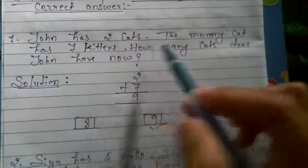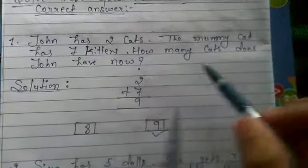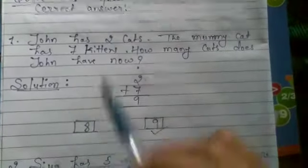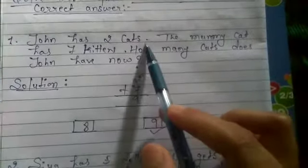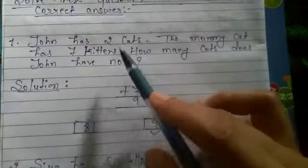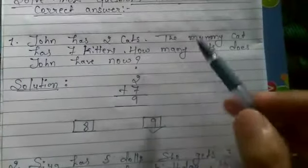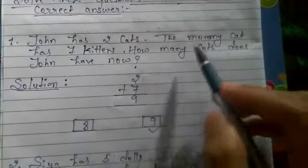First question is John has two cats. The mummy cat has seven kittens. How many cats does John have now? Here we are saying that John has two cats and mummy cat has seven kittens. Now we have to find out that John has total cats.